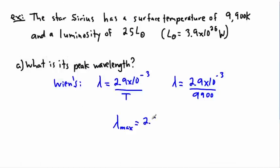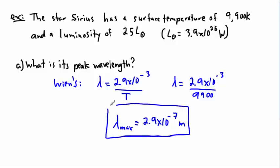I'll write that down: 2.9 × 10⁻⁷ meters. Maybe we can write it in nanometers because we know a lot of our visible wavelength colors are in nanometers. This is really the answer — this is what you needed. But just for fun, let's take a look at what this really means. That's the same thing as 290 nanometers, because a nanometer is 10⁻⁹ — you move the decimal to the right by 2.